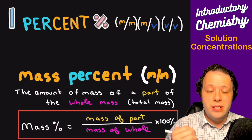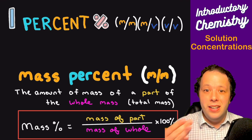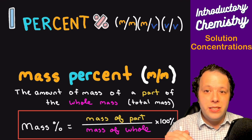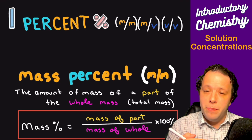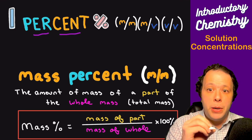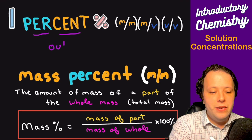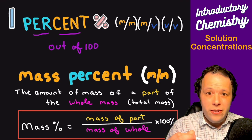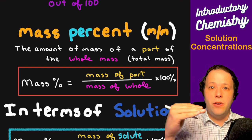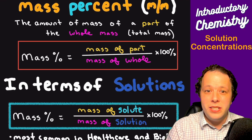Let's look at percent solutions. This is one of the most common ways we illustrate the concentrations of solutions in biology and the healthcare profession. Percents always mean per 100 — think cent, century, cents as in money, all about out of 100. So what is our 100? It's referring to the whole. We refer to mass percents as the amount of the part over the whole. The part in this case is your solute — whatever is being dissolved within your solution.